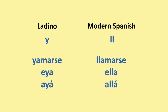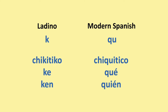The double L doesn't exist in Ladino as it does in modern Spanish — for this sound they would write a Y. For example, 'yamarse', 'eya', 'aya'. This sound is very common in modern Spanish as well, where some people say 'yamarse', 'eya', 'aya'. For the modern Spanish QU, in Ladino they would just write K. For example, 'chikitiko' instead of 'chiquitico', 'ke' instead of 'que', 'ken' instead of 'quien'.